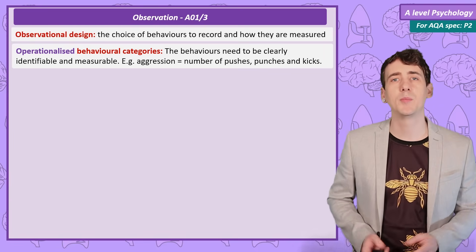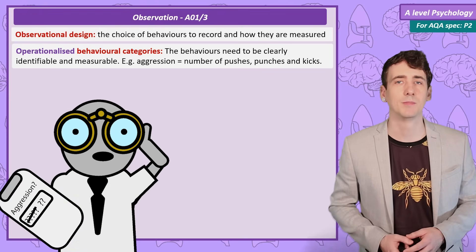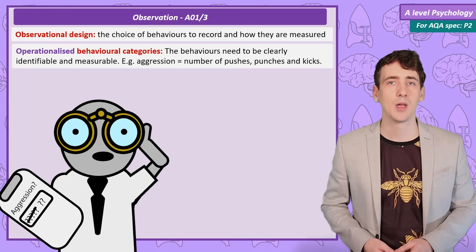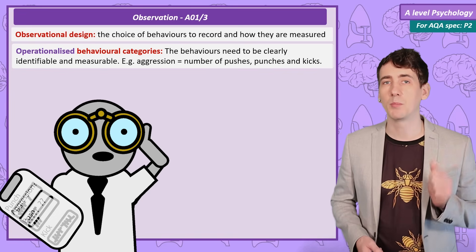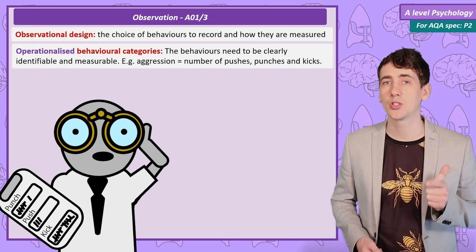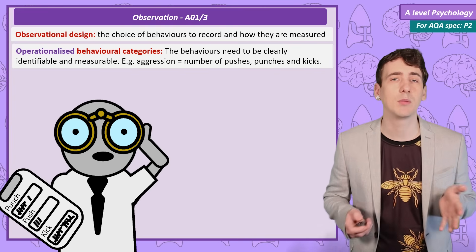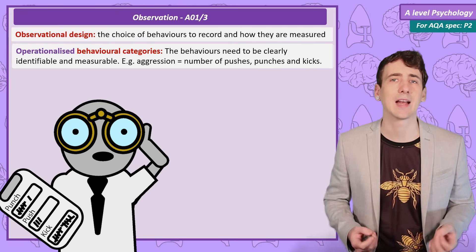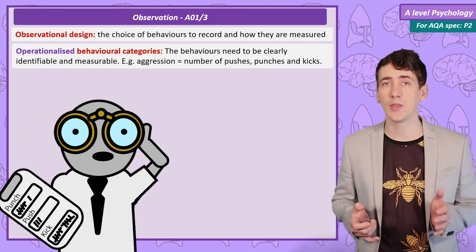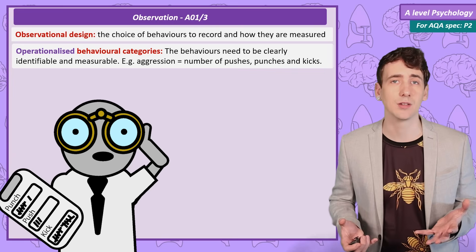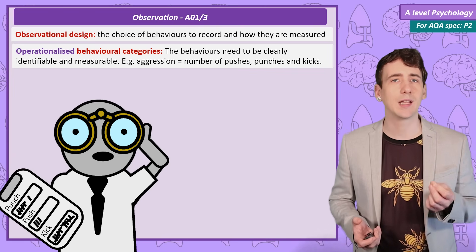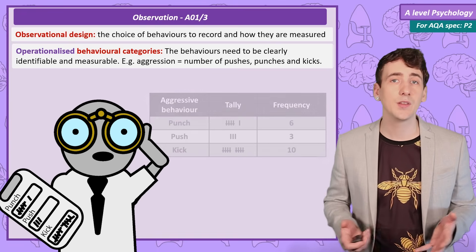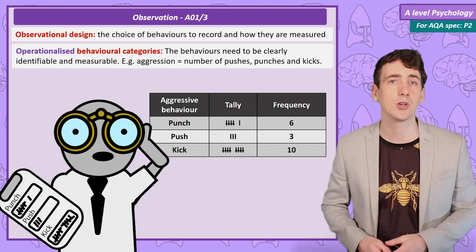If I say I am observing aggressive behaviour in children, that is vague and open to interpretation. But if I say I am recording every punch, push, and kick, it is very clear how I am defining aggression. So a behavioural category is exactly that — I have a target behaviour to observe, in this case aggression, and from that I create a list of behavioural categories that can be easily observed and counted. This can be turned into a frequency chart to help me record.